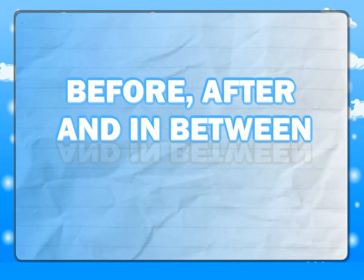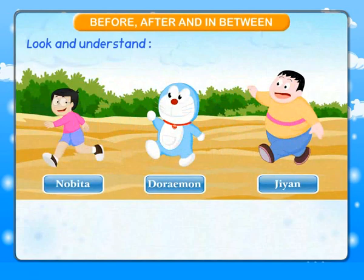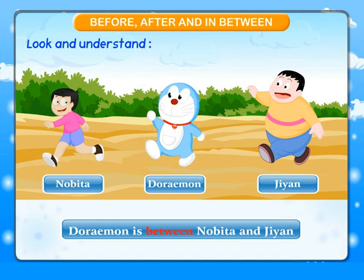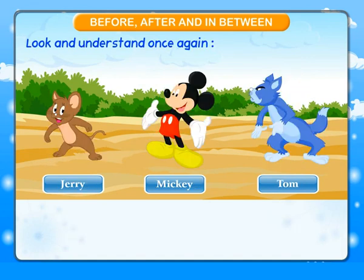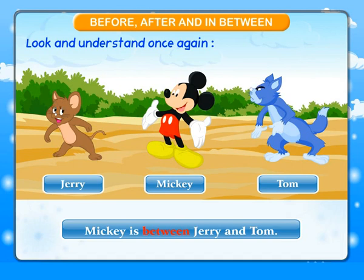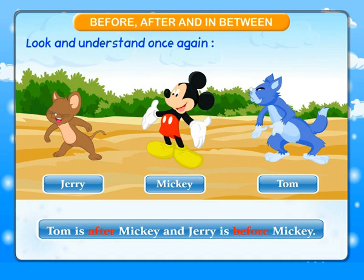Before, after and in between. Look and understand. Nobita is before Dorymon. Gian is after Dorymon. And Dorymon is between Nobita and Gian. Look and understand once again: Mickey is between Jerry and Tom. Tom is after Mickey. And Jerry is before Mickey.